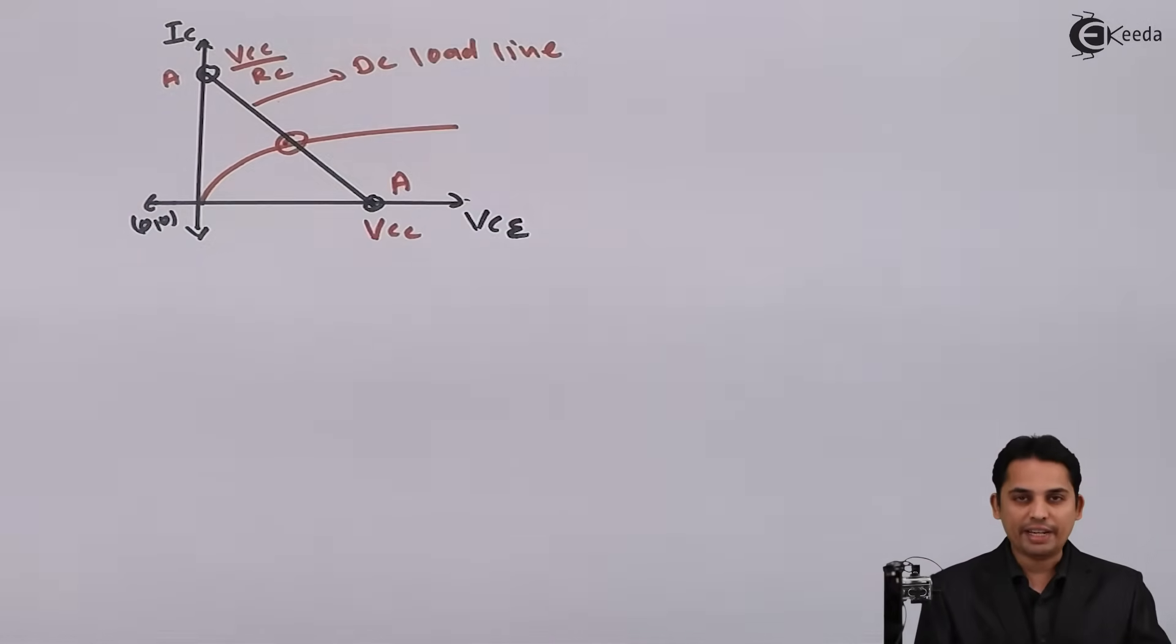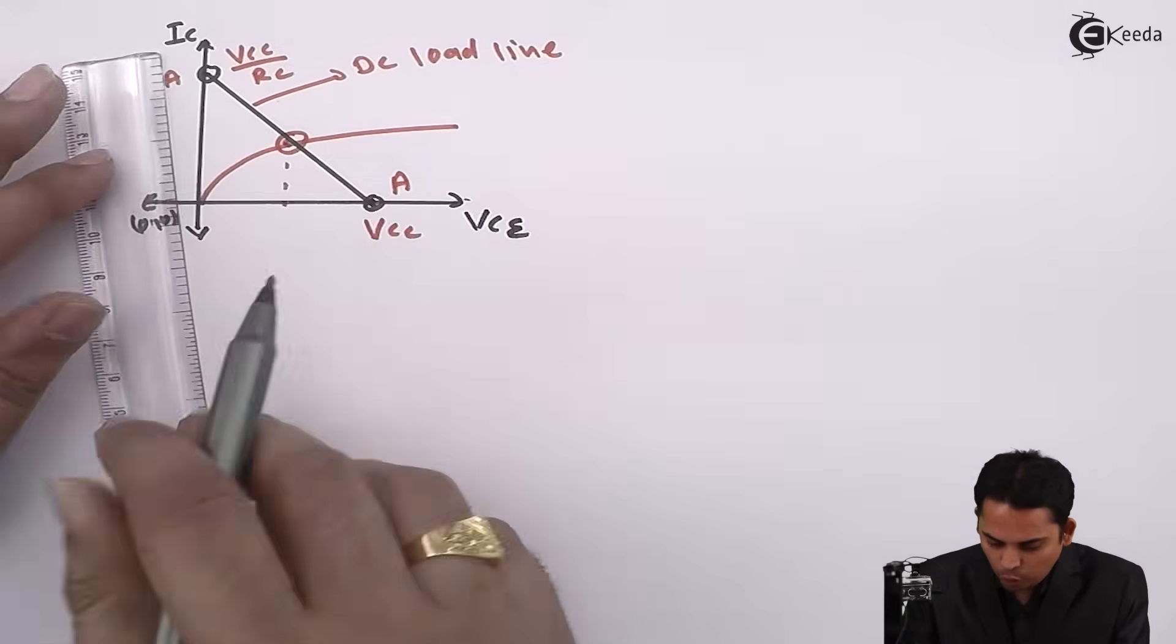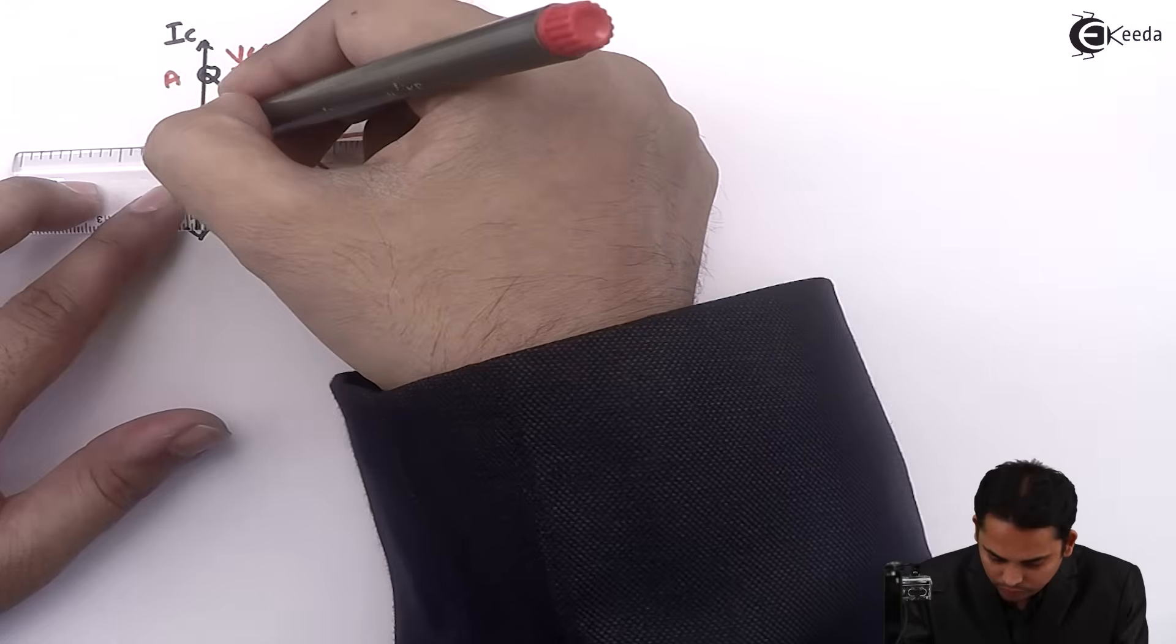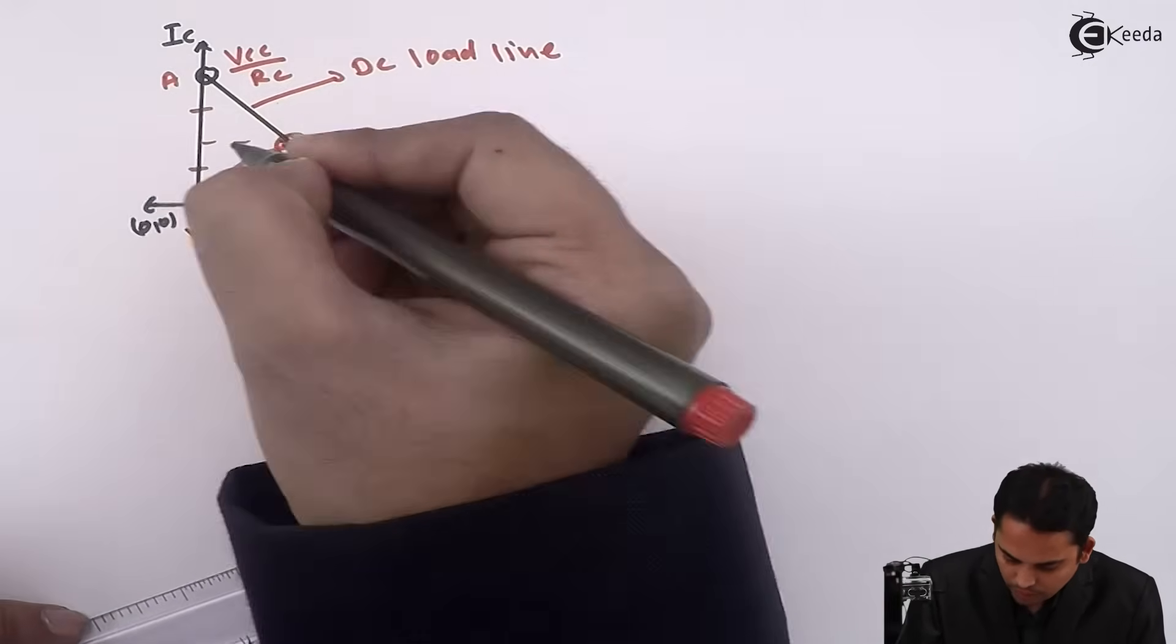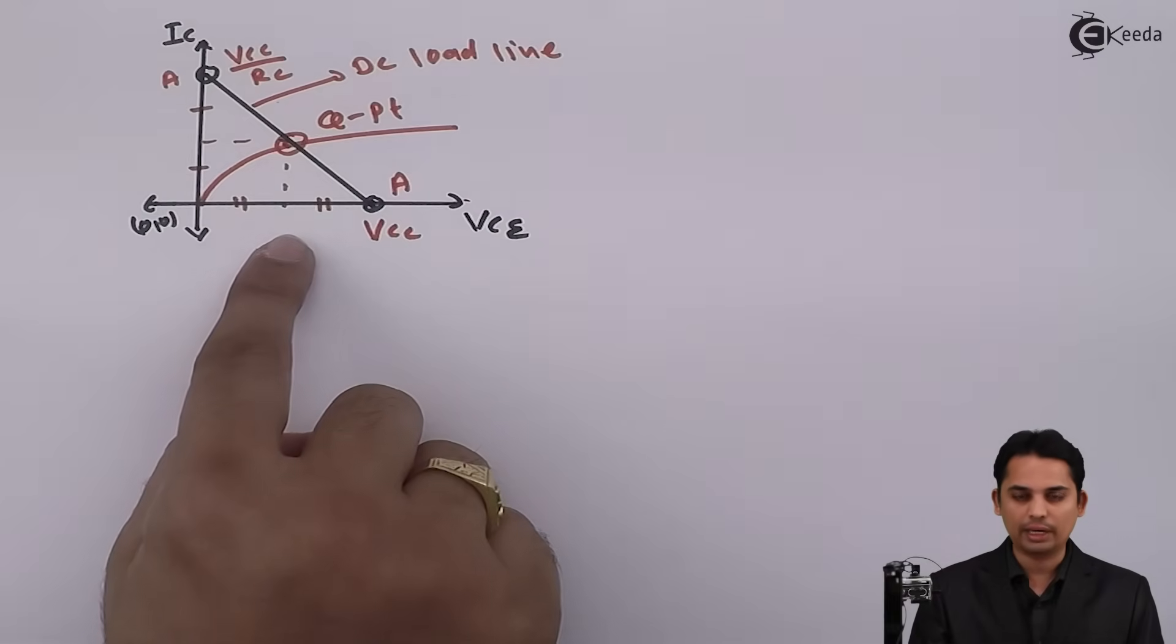What we can do is we can select Q point exactly at the middle of the loadline. When output characteristics intersect DC loadline, we can get different Q points. But for faithful amplification, we are going to select Q point at exactly middle of the loadline as shown in the diagram.